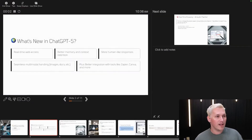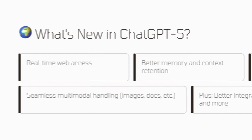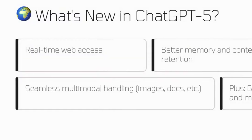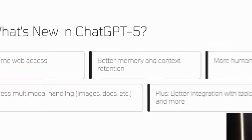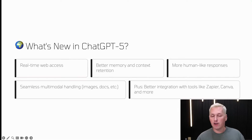What is new in ChatGPT5? First off, real-time web access, better memory and context retention, more human-like responses, and seamless multimodal handling with images and docs. It can actually rewrite stuff — you can upload a PDF and it will rewrite it all. And there's better integration with tools like Zapier and Canva.